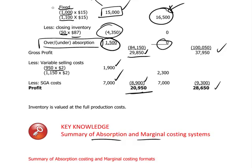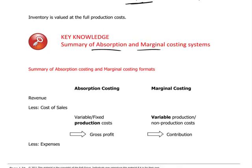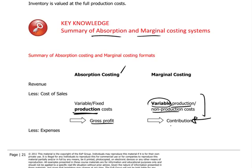Having fully digested the numbers, if you review the structure of the absorption and marginal costing profit and loss statements, you can see that for absorption costing the production costs — both variable and fixed — are grouped together to give gross profit. In contrast, the marginal costing system focuses on all variable production and non-production costs, and it's those variable costs of all types that are included in determining the contribution.